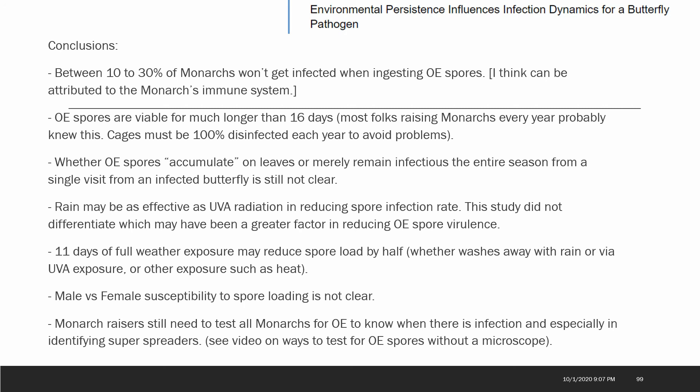Male versus female susceptibility to spore loading was not clear. I'm not sure why the data seemed to reflect some real differences between the males and females in some of the scenarios. This study would tend to confirm that to monarch raisers that we still need to test all monarchs for OE. We need to know if there is an infection or not. It's easy when there's no infection right? Life is so much simpler. So you don't need to take all the same precautions if you know you don't have an OE problem. And then of course you need to know as soon as you do have an OE problem to start taking a lot of precautions, and you want to especially identify any super spreaders that are developing in your cages. There is a video on ways to test for OE spores without a microscope if you need to know how to do that. So thanks for watching and see you in the next video.